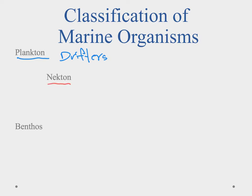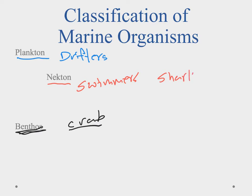Stepping away from plankton are the nekton, which we could call our swimmers. Nekton have the ability to choose their direction — though at times they might get caught up in currents and be more planktonic than nektonic. This is where we see most fish and things of that nature. Finally, we have the benthic organisms, or benthos — the ones that live down on the bottom and aren't affected by the water as much. A crab living on the bottom would be a benthic organism, a shark would be nektonic, and a man-of-war or jellyfish would be planktonic, even though they can swim short distances.